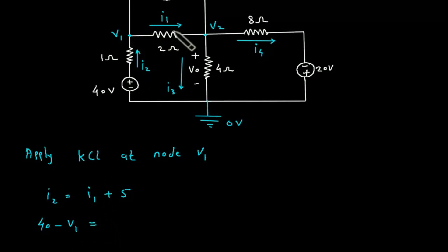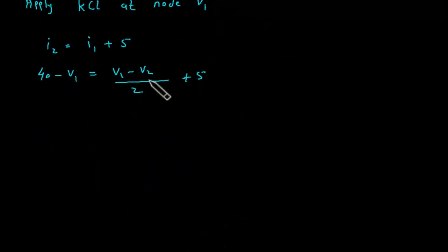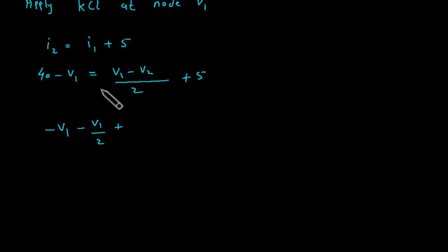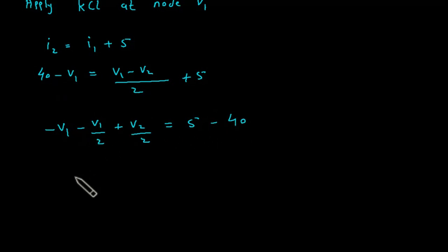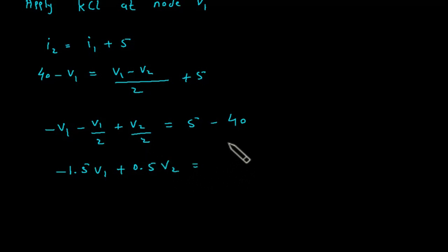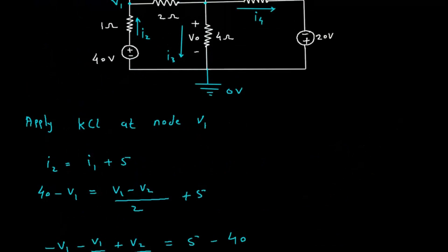At node V1: I2 equals I1 plus 5. I2 is (40 minus V1) / 1, which equals I1 = (V1 minus V2) / 2, plus 5. Rearranging: minus V1 minus V1/2 plus V2/2 equals 5. This simplifies to minus 1.5·V1 plus 0.5·V2 equals minus 35. This is equation number 1.